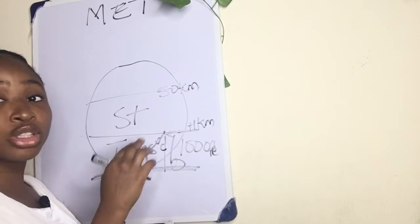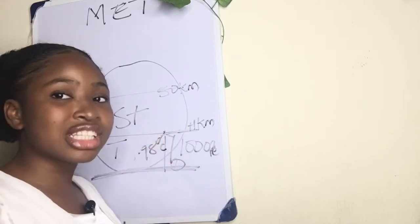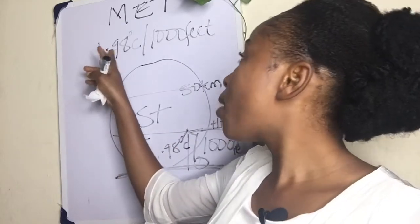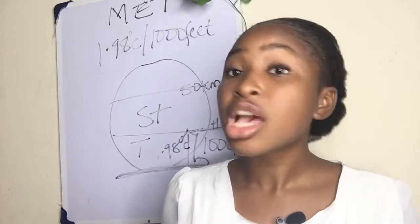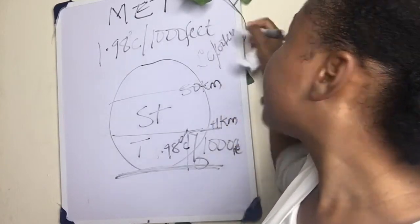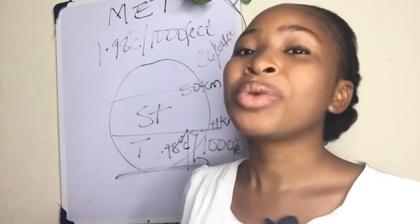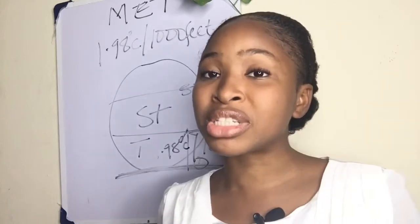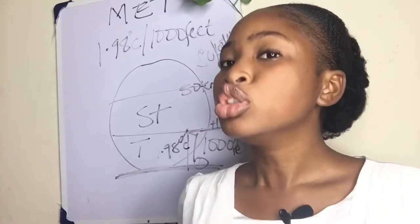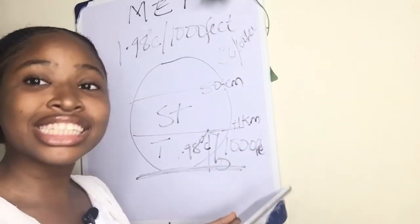For every 1,000 feet you go higher, the temperature changes by approximately 1.98 degrees Celsius. For calculation purposes in aviation, we use 2 degrees Celsius per 1,000 feet to make calculations easier. This is where you'll see why math is so important — you cannot do without it in aviation, even if it's not extreme mathematics. Another thing you should know is that mean sea level temperature is plus 15 degrees Celsius.